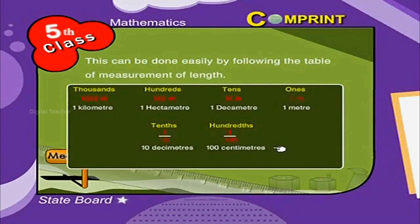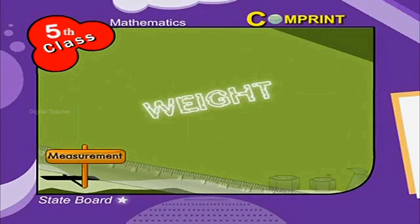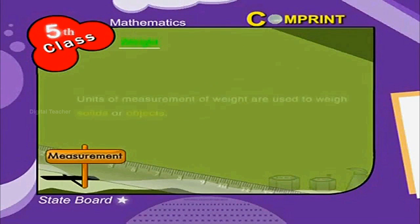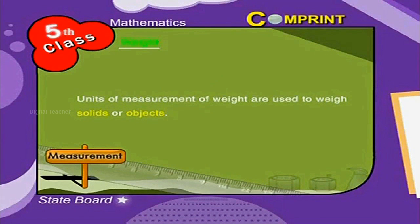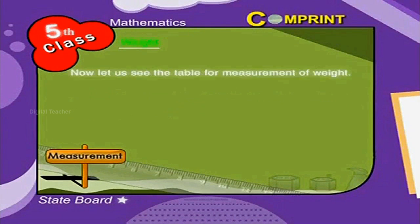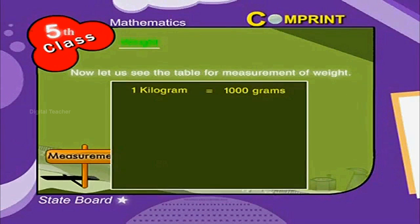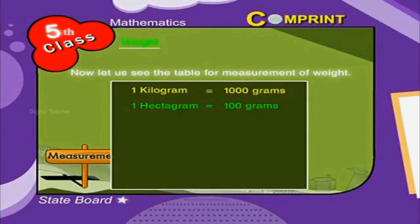This can be done easily by following the table of measurement of length. Units of measurement of weight are used to weigh solids or objects. Now let us see the table for measurement of weight. One kilogram is equal to one thousand grams. One hectogram is equal to one hundred grams. One decagram is equal to ten grams.